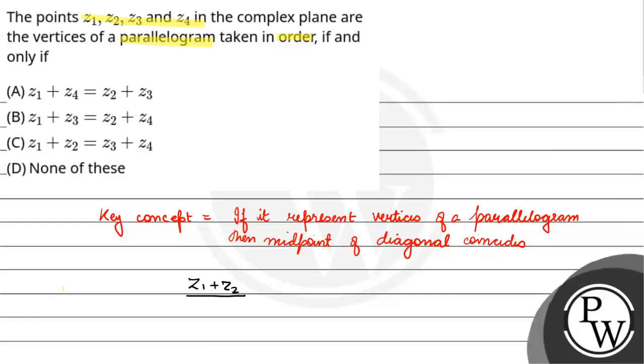So here Z1 plus Z3 divided by 2 equals Z2 plus Z4 divided by 2. Therefore, Z1 plus Z3 is equal to Z2 plus Z4.